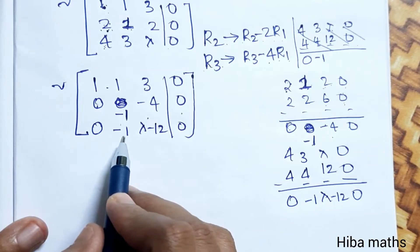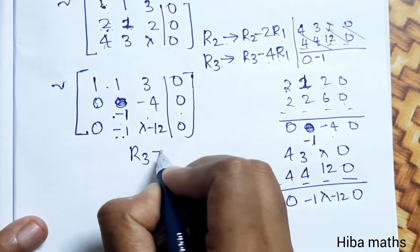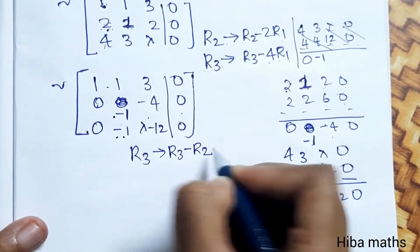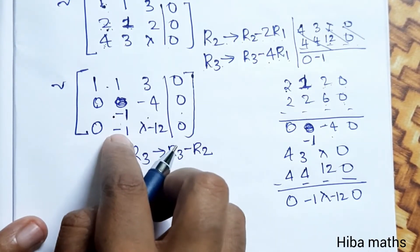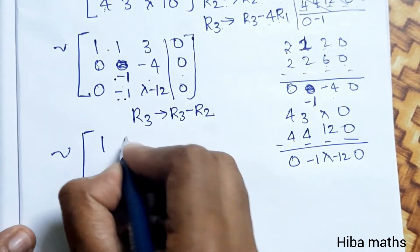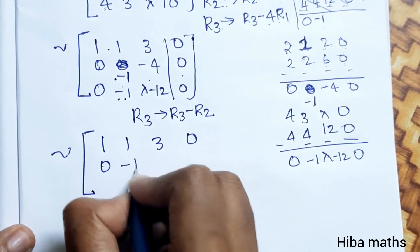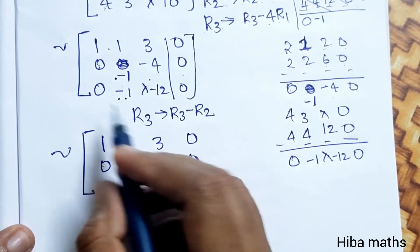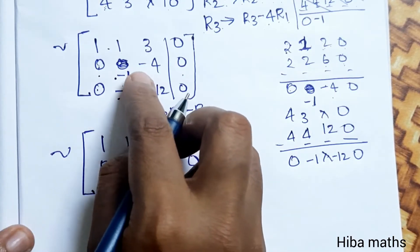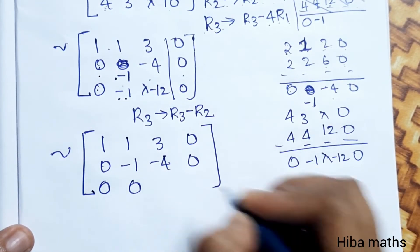Now R3 changes to R3 minus R2. Minus 1 plus 1 gives 0. The matrix becomes: row 1 is 1, 1, 3, 0; row 2 is 0, minus 1, minus 4, 0; row 3 is 0, 0, lambda minus 12 plus 4, 0 — that is 0, 0, lambda minus 8, 0.